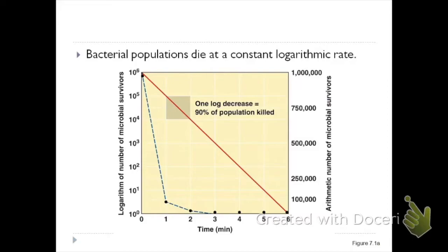Bacterial populations die at a constant logarithmic rate. Just as in the stages of microbial growth the second stage is the logarithmic phase, when bacteria die they also die at a logarithmic rate.